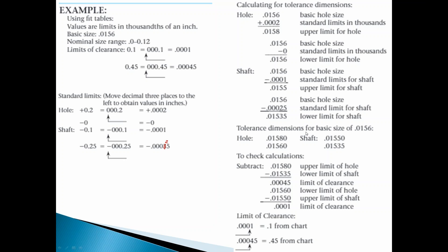To check your calculation: the tolerance dimensions for a basic size of 0.0156 give a hole of 0.0156 and a shaft of 0.01550 with corresponding limits. Subtract the upper limit of the hole (0.01580) minus the lower limit of the shaft (0.01535) to get a maximum clearance of 0.00045. Subtract the lower limit of the hole (0.0156) minus the upper limit of the shaft to get a minimum clearance of 0.001, which matches the table values of 0.1 and 0.45.